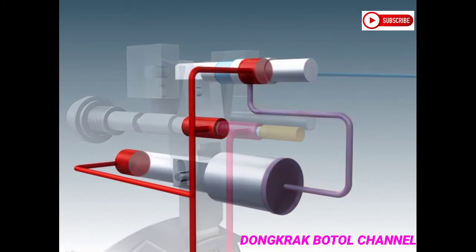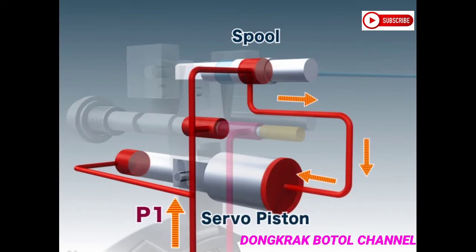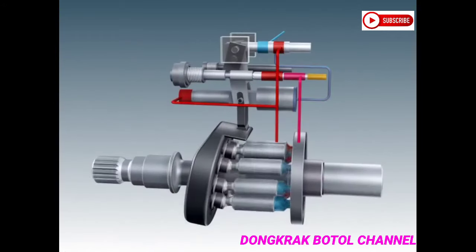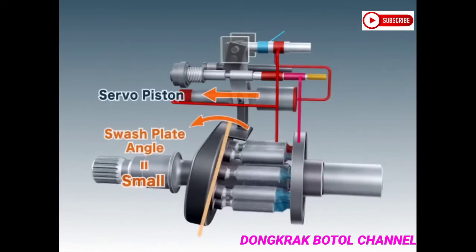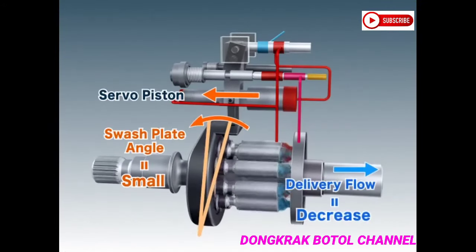Also, the delivery pressure of P1 passes through the spool and pushes against the larger side of the servo piston. As the servo piston moves, the inclination of the swash plate decreases, reducing the delivery flow.